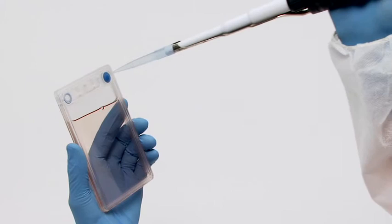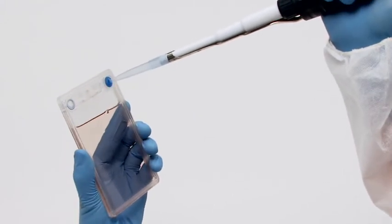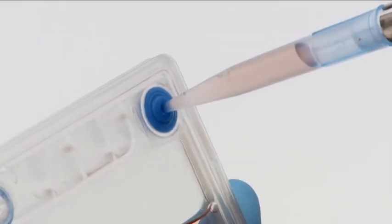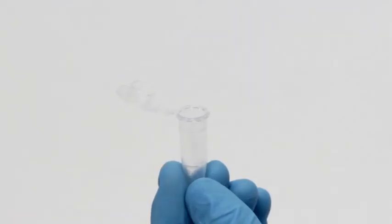To extract the pellet, use a micropipette with a 1 mm tip. Transfer the cells into a conical tube.